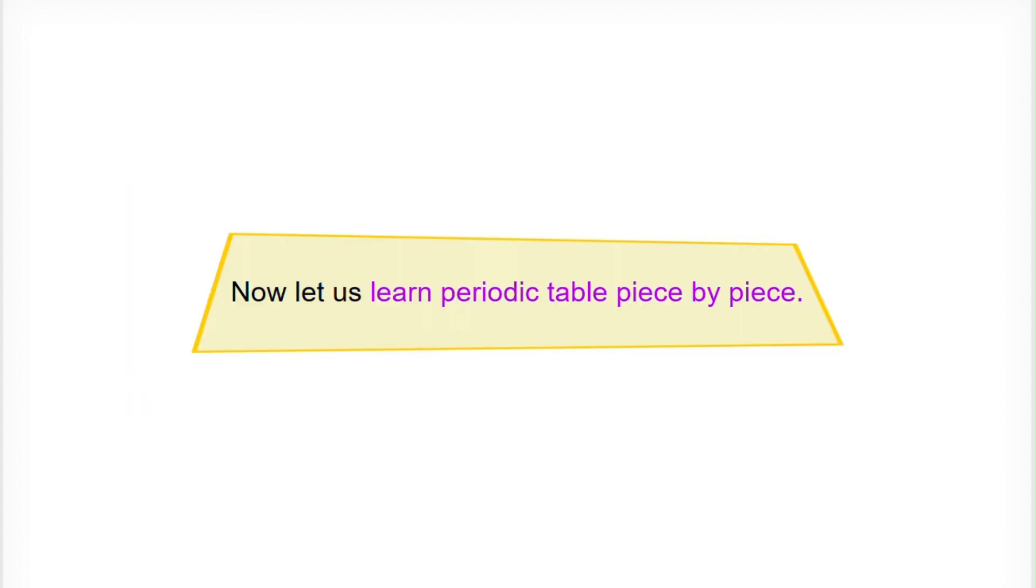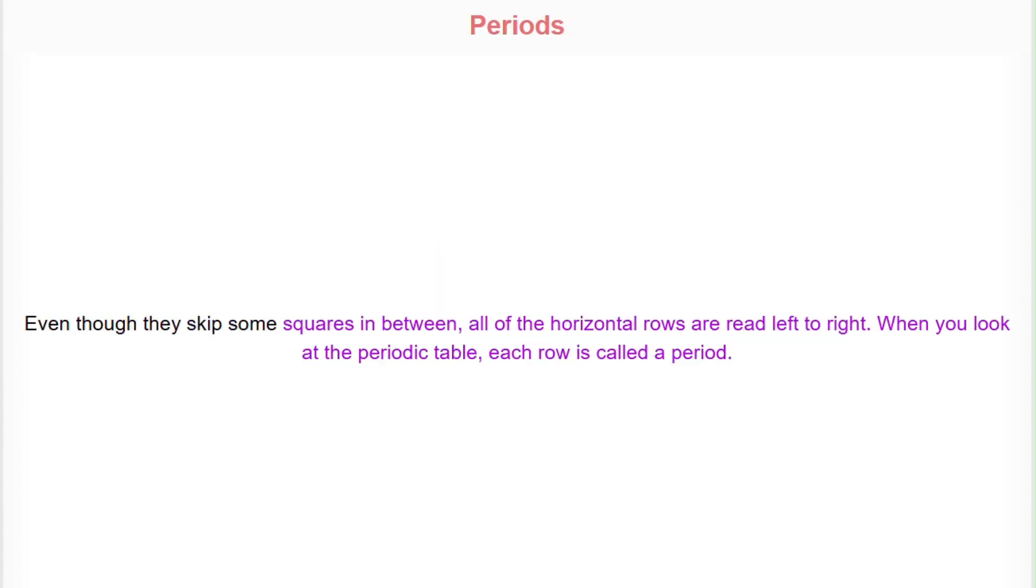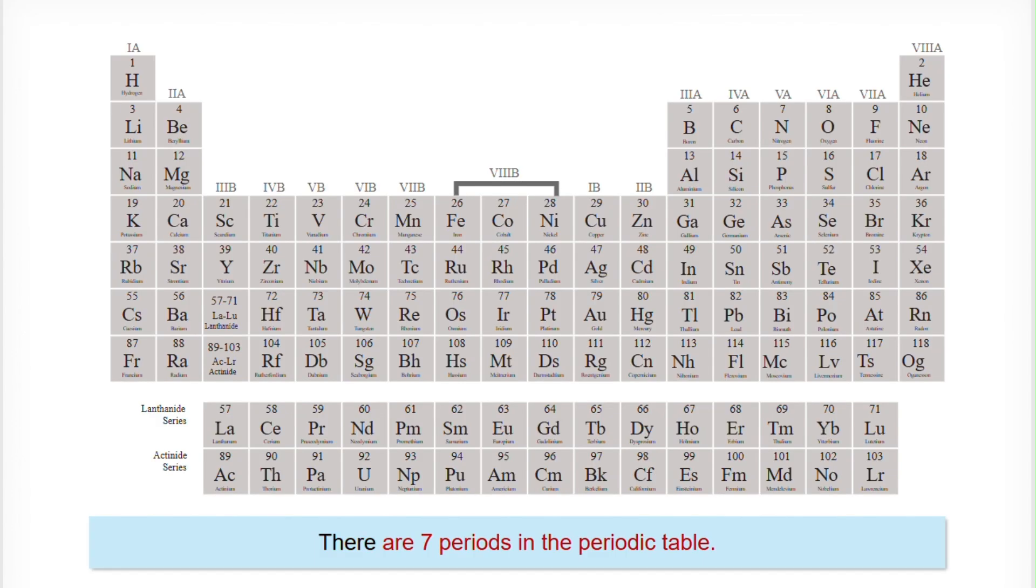Now, let us learn the periodic table piece by piece. Even though they skip some squares in between, all of the horizontal rows are read left to right. When you look at the periodic table, each row is called a period. There are 7 periods in the periodic table.